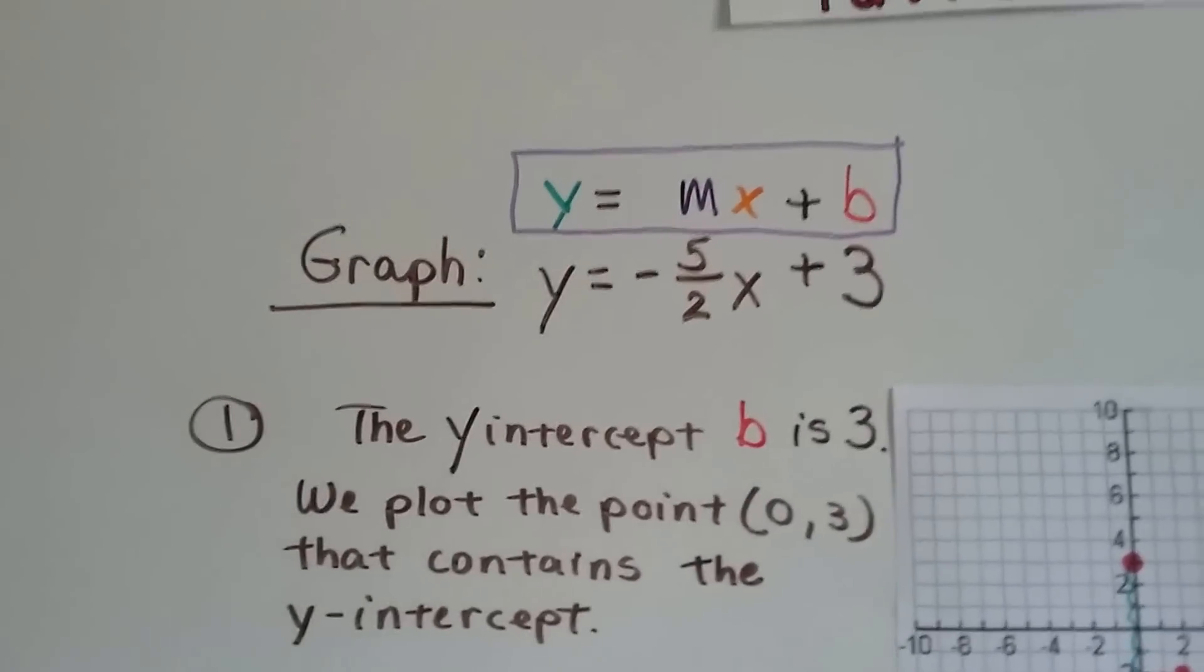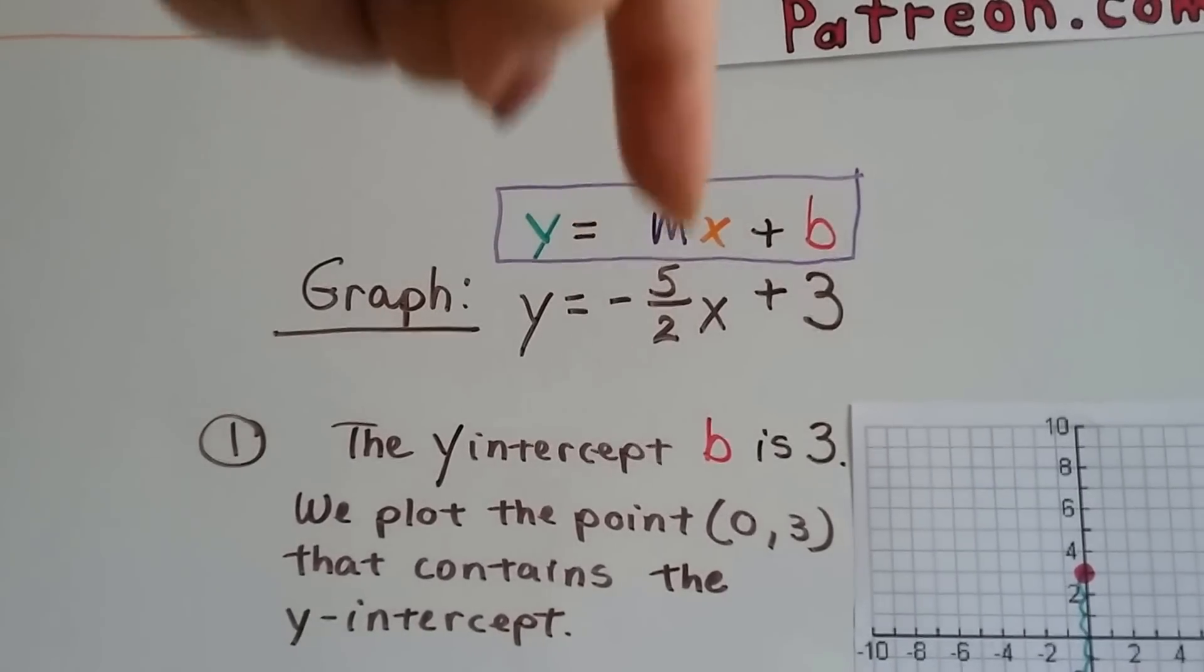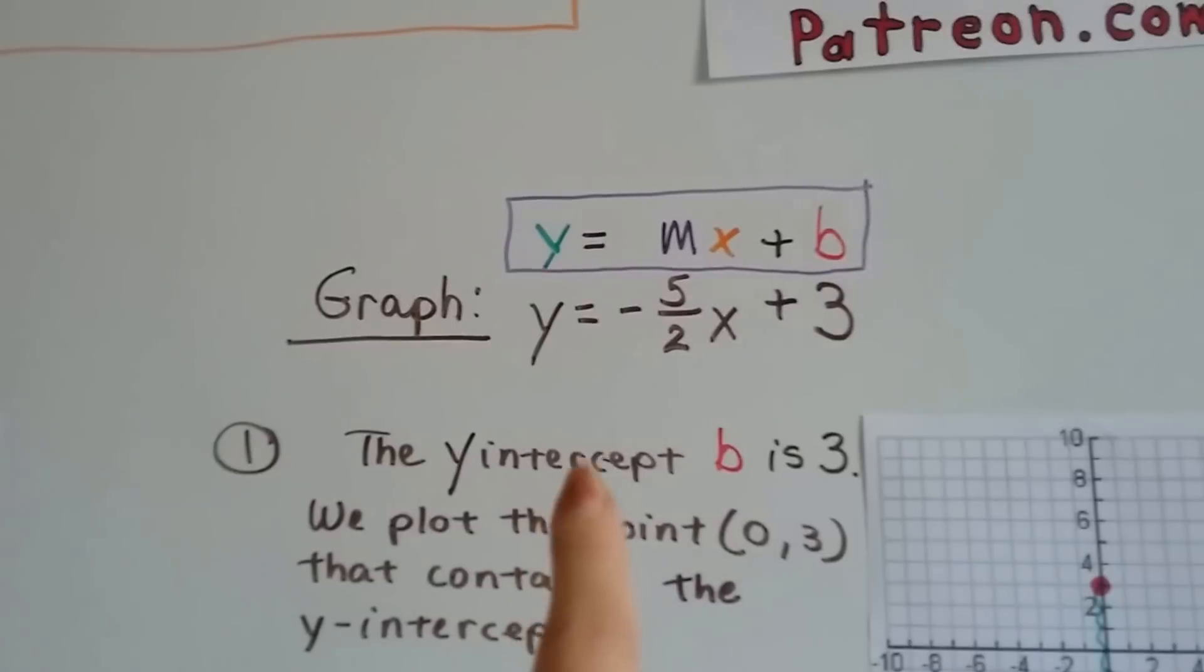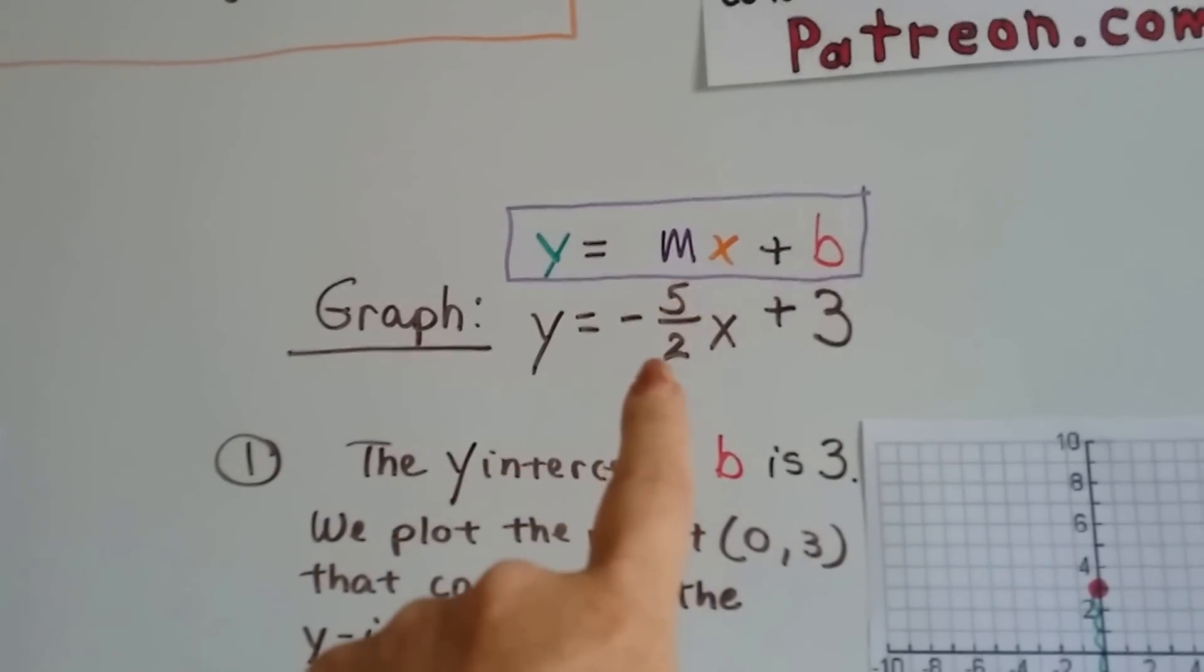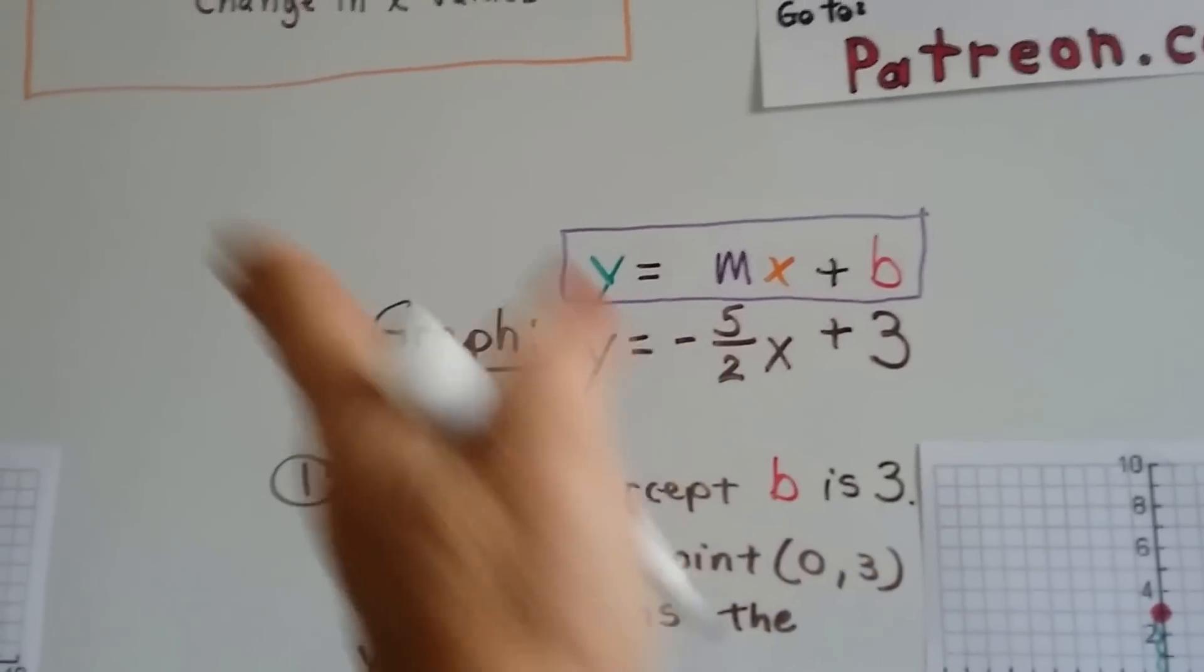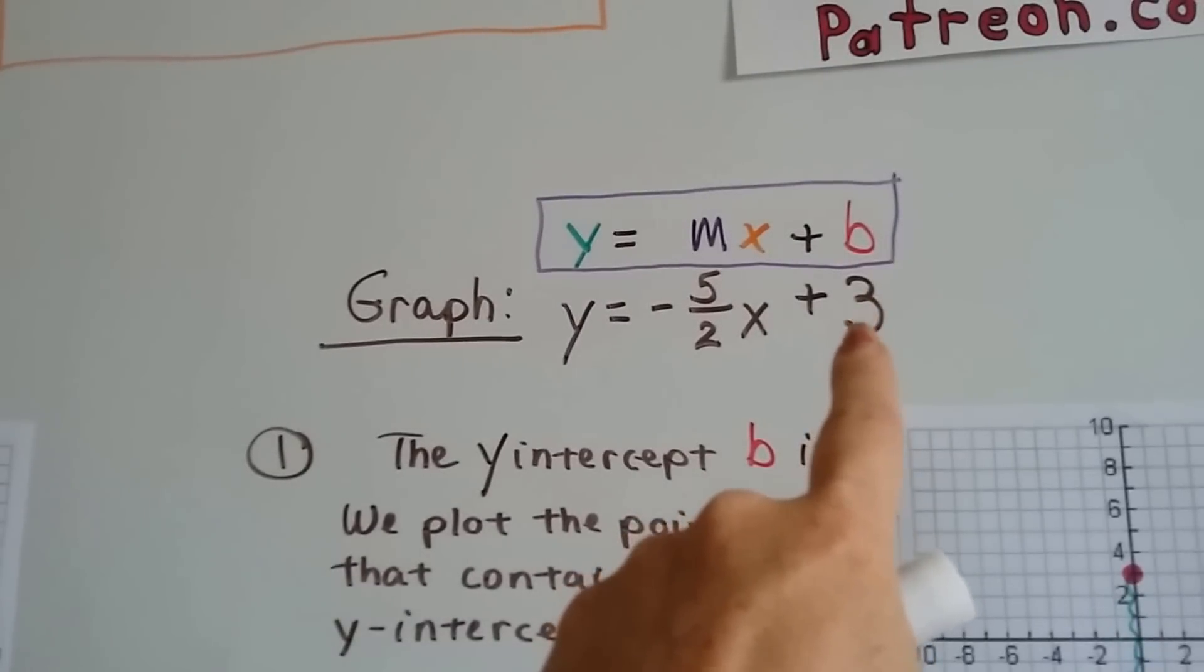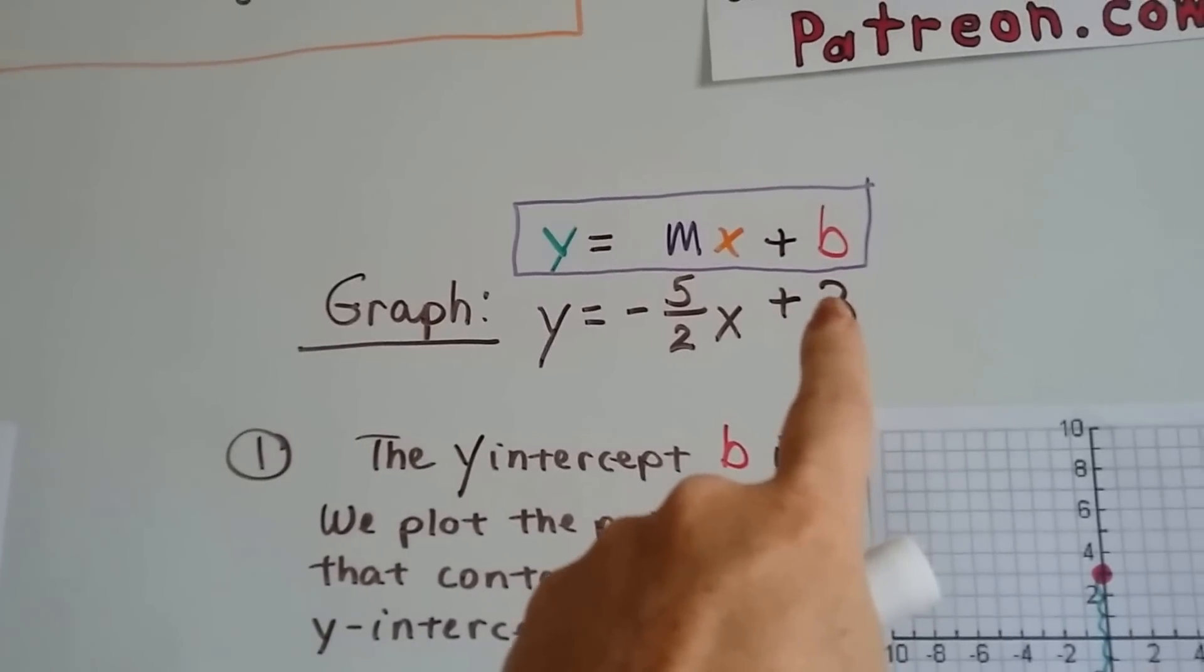So here we've got our slope form right here, and we can compare it to the equation. So we can see right away that the slope is a negative 5 over 2. So knowing that's negative, we now know our line is going to go that way.